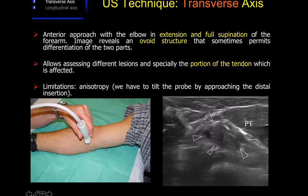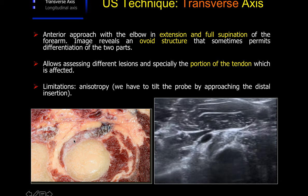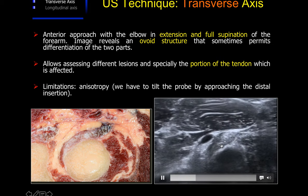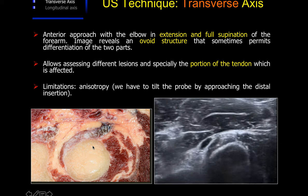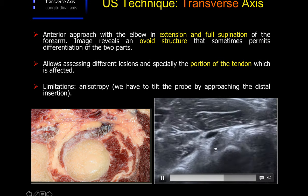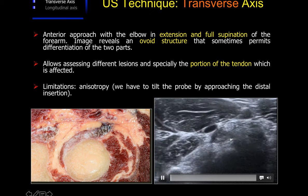On axial planes, the examination has to be performed by moving the transducer proximally and distally using an anterior approach, with the elbow extended and fully supinated. The image reveals an ovoid structure from which the two components can sometimes be differentiated, especially when they are pathologic. The anisotropy requires a very dynamic examination, especially when approaching the distal insertion at the radial tuberosity, because most of the ruptures occur at this attachment. This is why we have to follow, in the short axis, to achieve the insertion of the tendon.